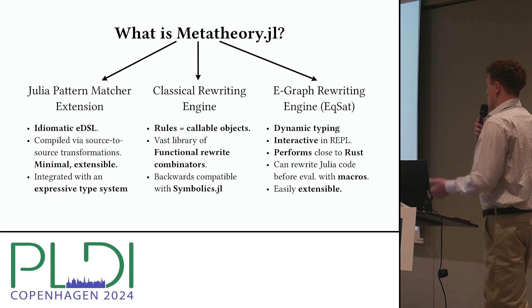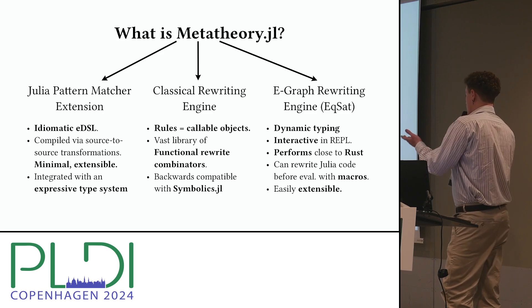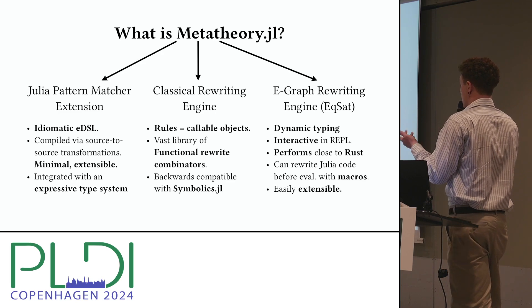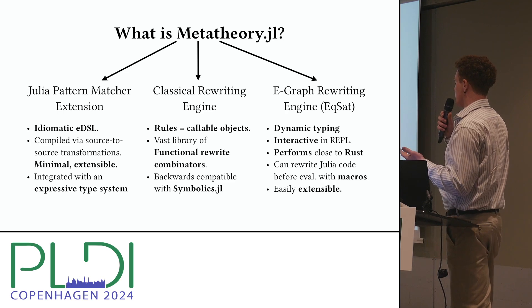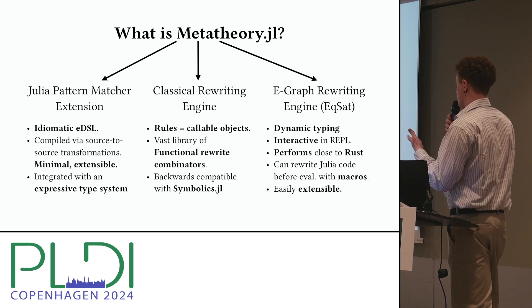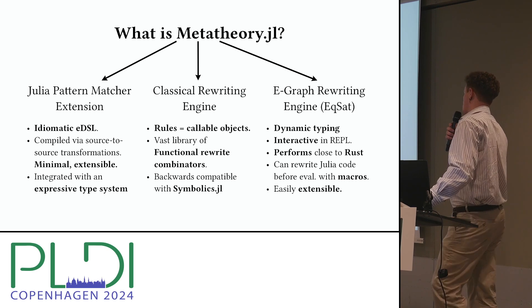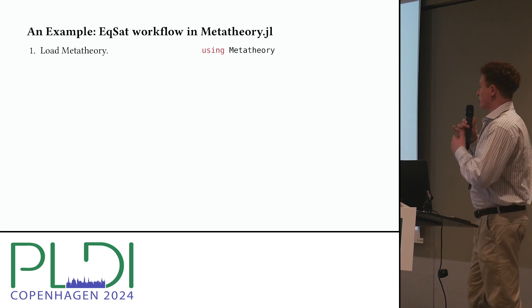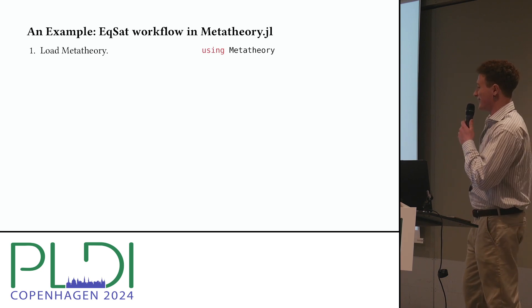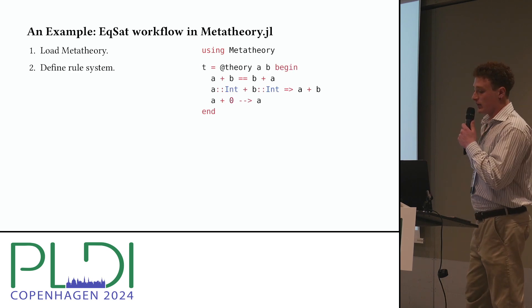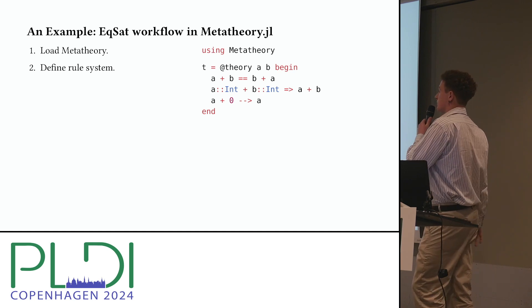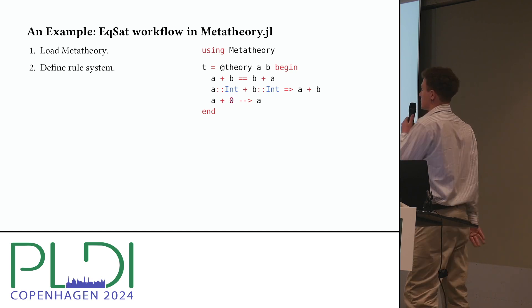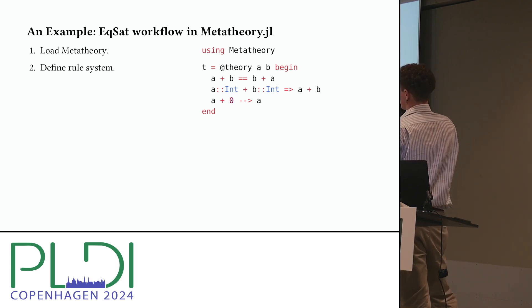The e-graph engine is interactive — you can stop saturation, jump inside, debug it, visualize it, and it performs close to egg, as we managed to optimize it heavily. You can run equality saturation inside your program with just a macro and define your equality saturation workflow without leaving the Julia REPL. Let's look at a workflow: first we load the package, then define a system of rules with the theory macro, which is just a vector of rewrite rules where the macro expands syntax into actual pattern matching functions.